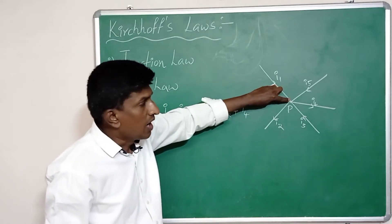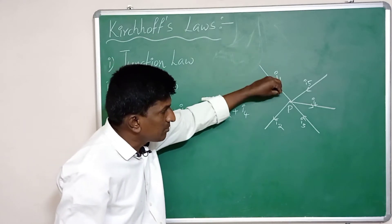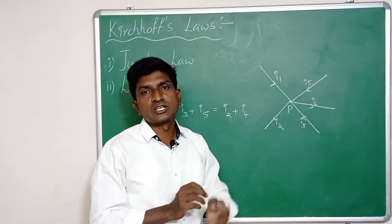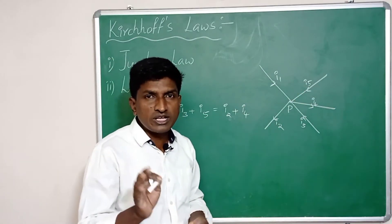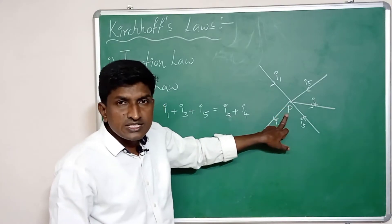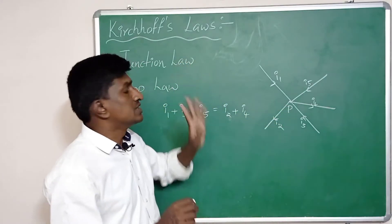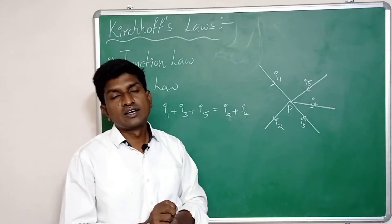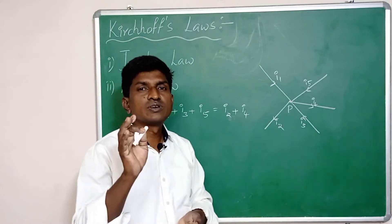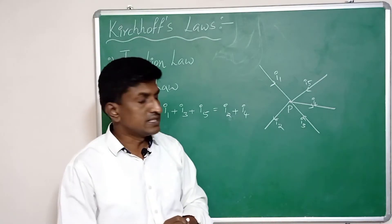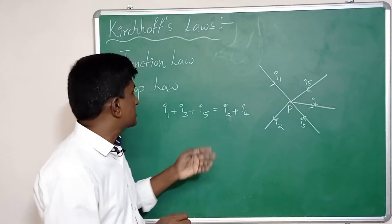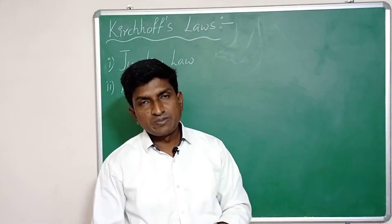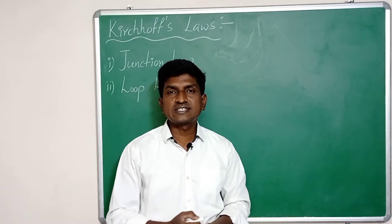This means there is no accumulation of current at the junction. However much current is coming towards the junction, the equal current is moving out. There is no accumulation of charge at the junction. This junction law is based on the conservation of charge.